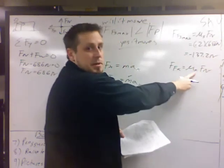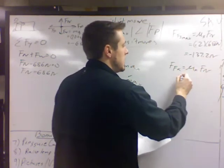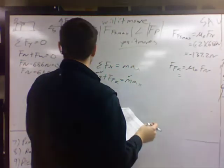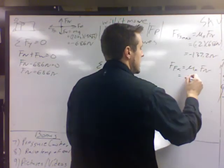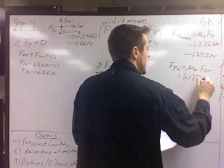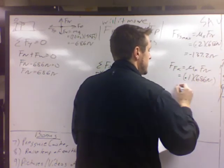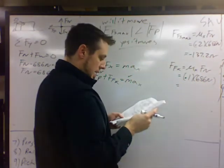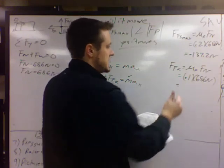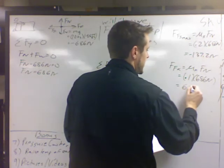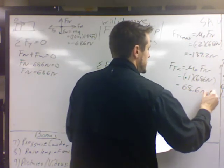So that would be mu sub k times the normal, which we already calculated. So 0.1 times 686 newtons. So we get 68.6 newtons.